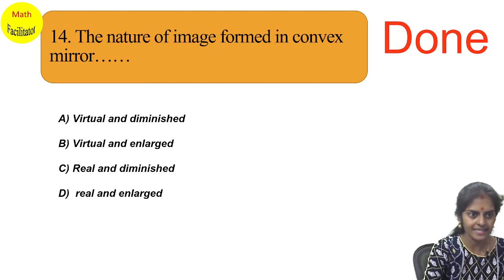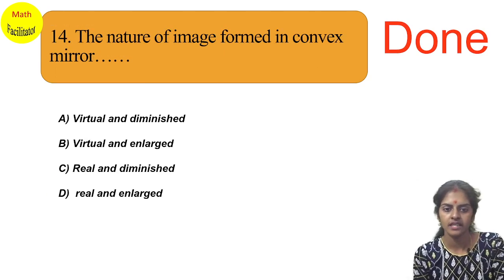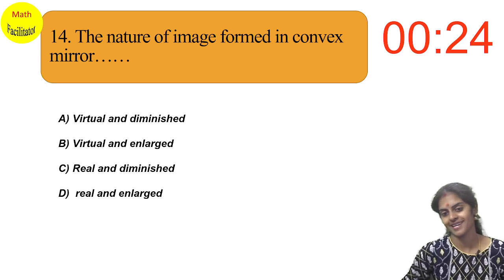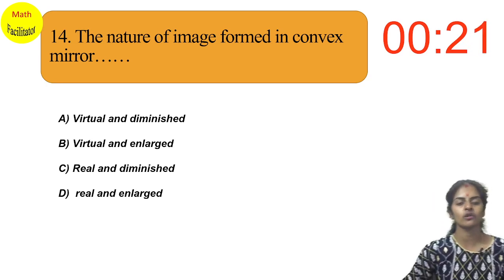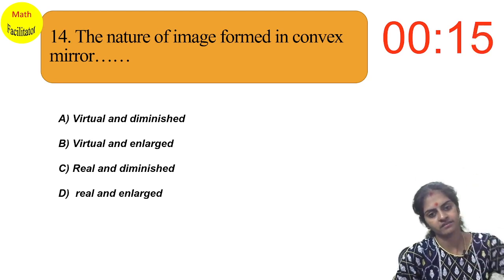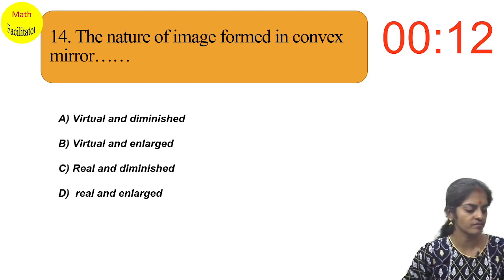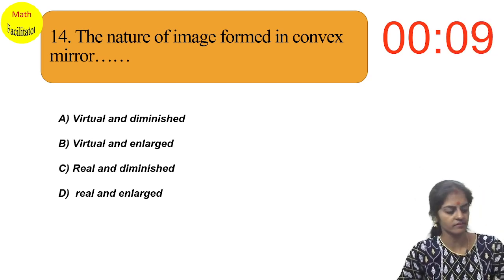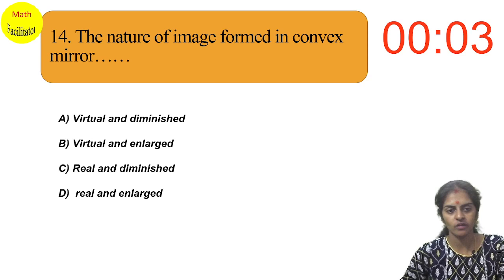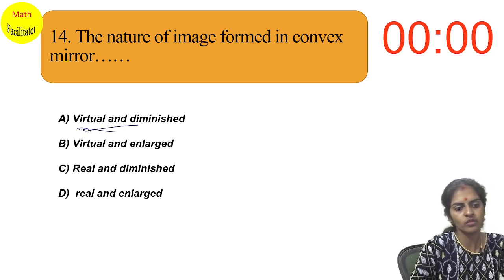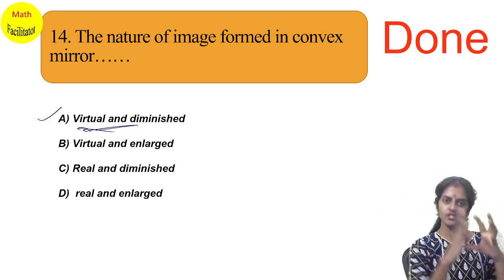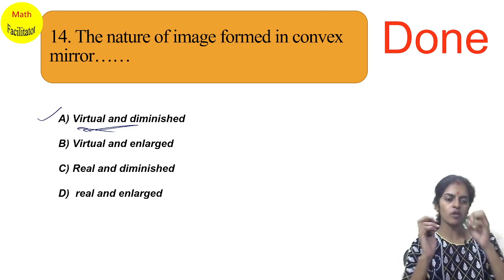Next question: what is the nature of the image formed by a convex mirror? We use a convex mirror as a rear-view mirror. The answer is that the image formed by a convex mirror is always virtual and diminished — objects appear smaller but cover a wider field of view.